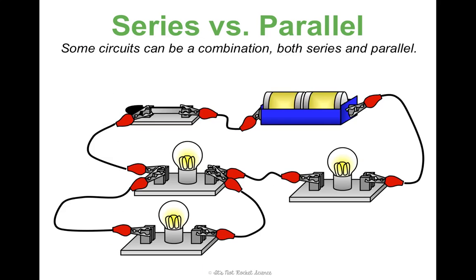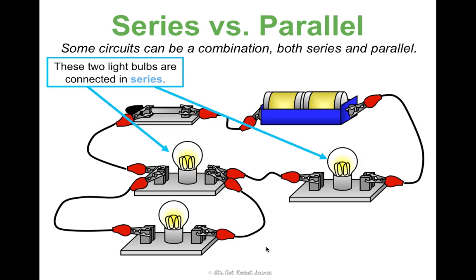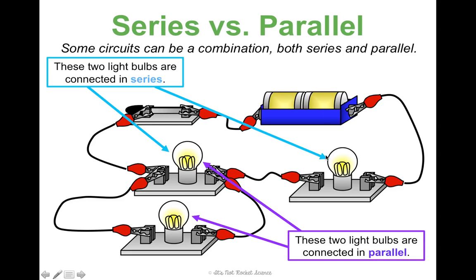It's not always that simple either — some circuits can be a combination of both series and parallel. In this picture we can actually see both. These two light bulbs are connected in series: I have to go through one to get to the other, they're connected within the same singular pathway. Whereas these two light bulbs are connected in parallel: I can go through this pathway, or I can go through this one. These two do not need to be on at the same time.